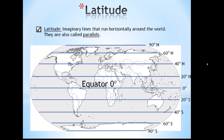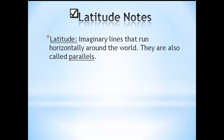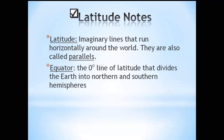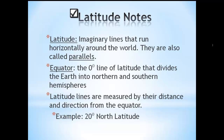An easy way to remember which lines are latitude lines is to think of a ladder. Lines of latitude are like steps of a ladder going up and down the Earth. Let's review the notes you should have written so far. Our definition of latitude: latitude lines are imaginary lines that run horizontally around the world. They are also called parallels. The equator is the zero-degree line of latitude that divides the Earth into northern and southern hemispheres. Latitude lines are measured by their distance and direction from the equator. An example of how latitude coordinates are given is 20 degrees north latitude.